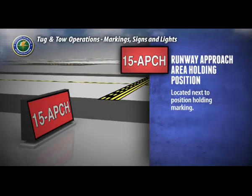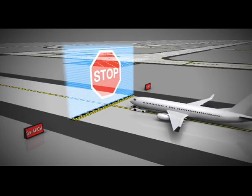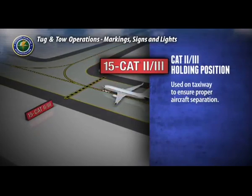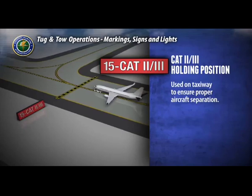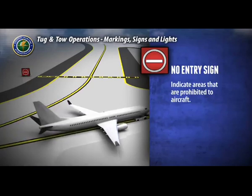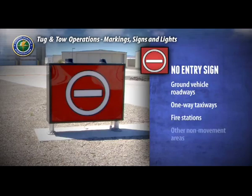The runway approach area holding position sign is located on the taxiway next to yellow holding position markers. Its purpose is to hold an aircraft on a taxiway short of a runway approach or departure area so the aircraft does not interfere with runway operations, such as penetrating the airspace required for the approach or departure runway or crossing through the runway safety area. You may not move beyond this sign until cleared by air traffic control. The Cat 2/Cat 3 holding position sign is used on a taxiway parallel to a runway during Cat 2/Cat 3 operations to ensure proper aircraft separation. The no entry sign is located at entry points of areas prohibited to aircraft, such as ground vehicle roadways, one-way taxiways, fire stations, or other non-movement areas.